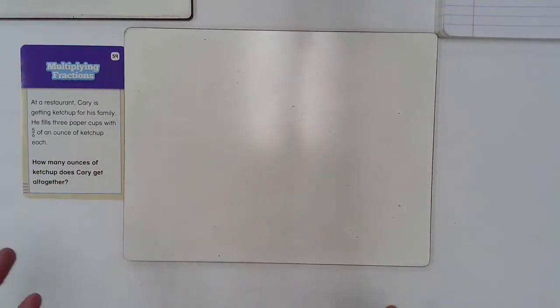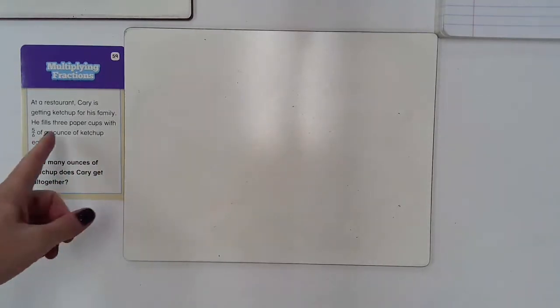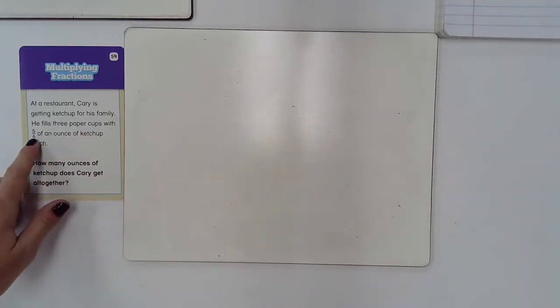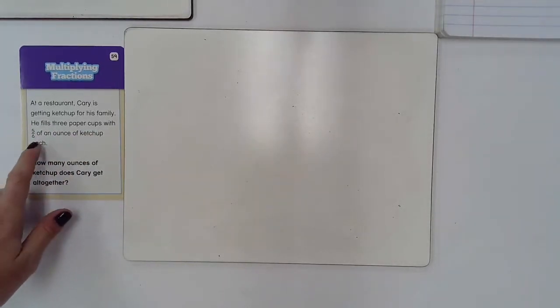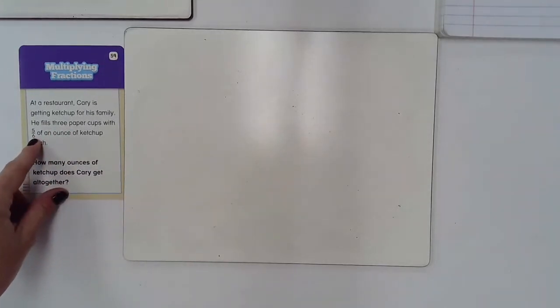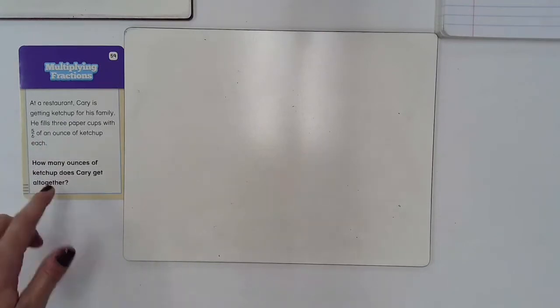So this problem is about somebody gathering ketchup into three cups, and each one of these cups is going to be filled with five-sixths of an ounce. So that important information is three cups and that five-sixths of an ounce. And of course, it's asking me how much is that going to be all together.